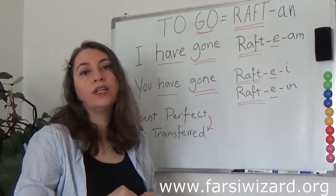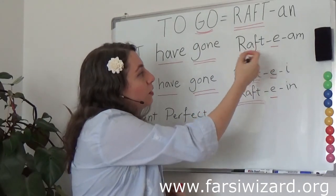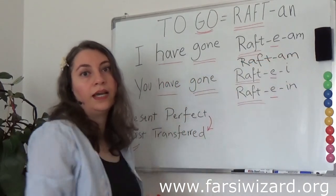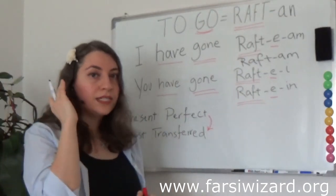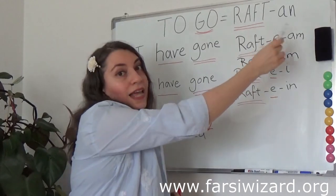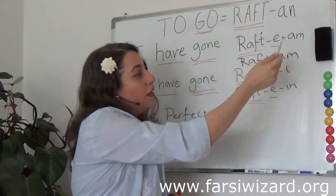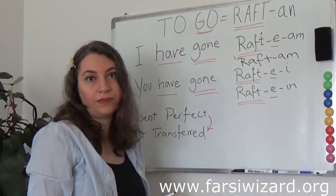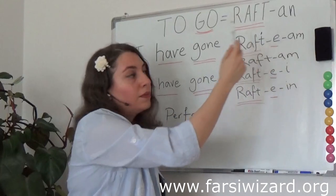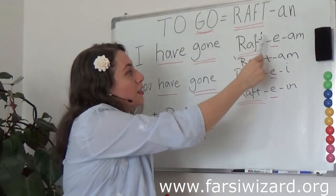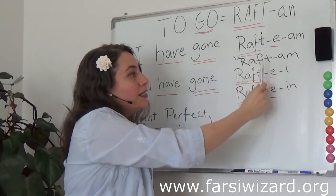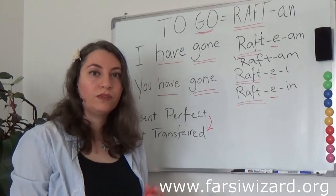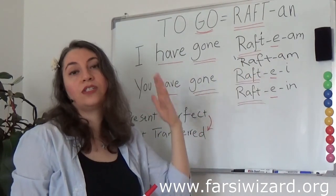Many of my students ask: if I hear RAF-TAM, how do I differentiate between that and when someone simply says RAF-TAM for the simple past — 'I went'? The differentiation is quite subtle. You have to listen carefully. When someone says 'I have gone' (present perfect), the stress is on the ending: raf-TAM. But when someone says 'I went' in the simple past, the stress is at the beginning: RAF-tam. So the stress shifts. This is very subtle and needs a lot of practice, but I wanted you to know that not everything starting with RAF is just a simple past.